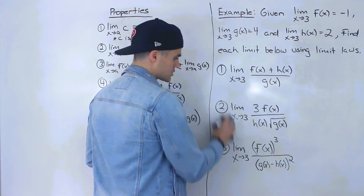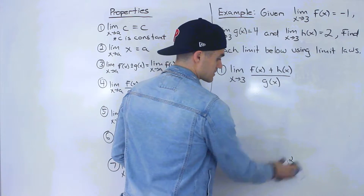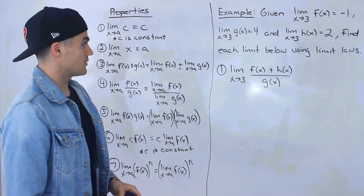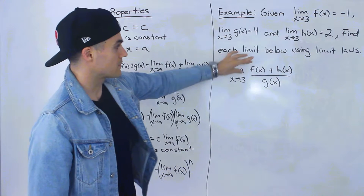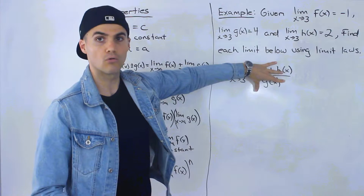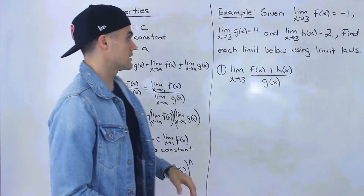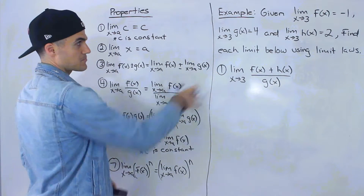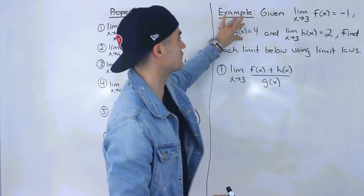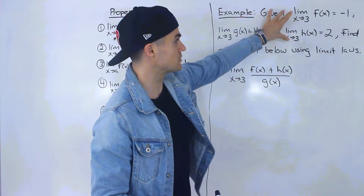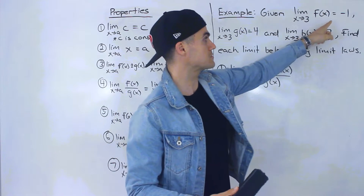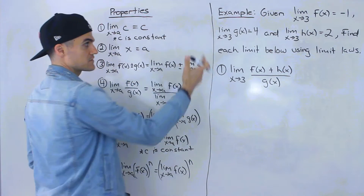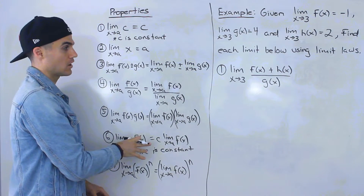I'm going to erase problems 2 and 3 for space to solve number 1 and then bring those back once we get to them. Notice that we have the limit as x approaches 3 of f of x plus h of x all over g of x. We have to try to convert this expression to be in terms of these expressions, and then we can substitute those numbers: negative 1, 2, and 4. To do that we have to use these limit laws.